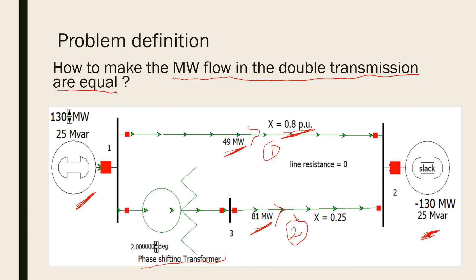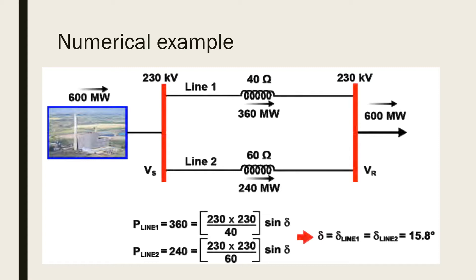Now we will simulate and see the result using the PowerWorld simulator. But before doing the simulation, let me take a numerical example to illustrate how this happens. Here there is a power station supplying 600 megawatt through a double transmission line. Line 1 carries 360 megawatt and line 2 carries 240 megawatt, both operating at a power angle of 15.8 degrees. This difference in power flow happens because the reactance of one line is 40 and the other is 60 — where the reactance is less, more power is flowing.